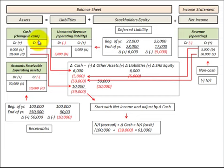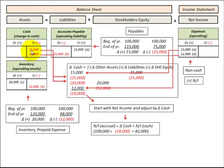To summarize: any changes in cash not included as part of income show up as a positive change in cash in our accounting equation. Any revenues included as part of net income are subtracted in the accounting equation. Any reduction in cash or cash paid that is not included as part of net income shows up as a negative change in cash. And any expenditures included as part of net income are added back, showing a positive change in cash in our accounting equation.